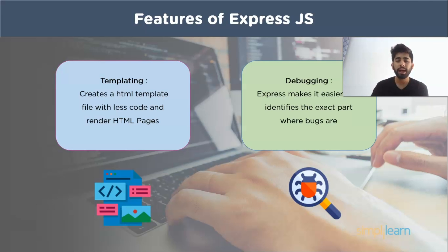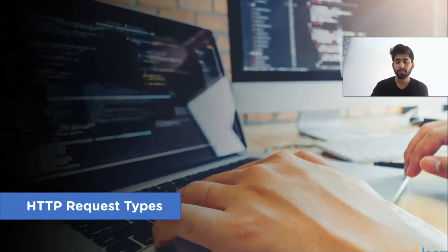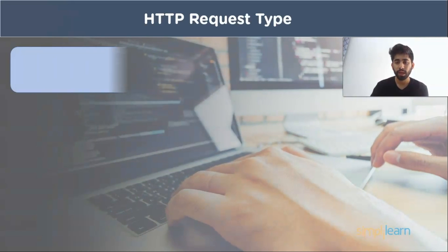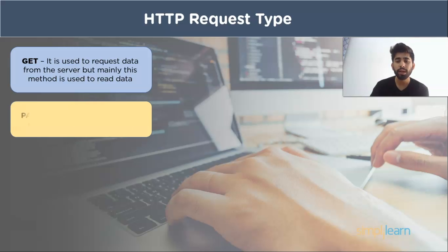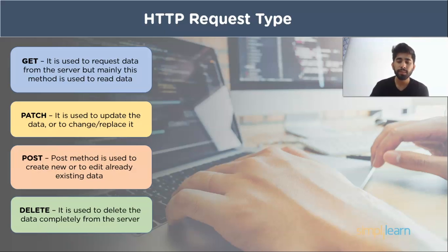Now we will see the HTTP request types. The first one is GET — it is used to request data from the server, mainly used to read data. The second one is PATCH — it is used to update, change, or replace data. The third one is POST — this method is used to create new or edit already existing data. The last one is DELETE — this method is used to delete data completely from the server.